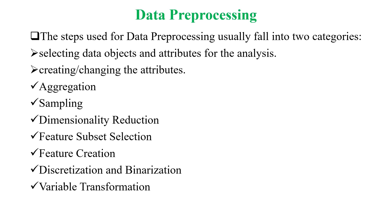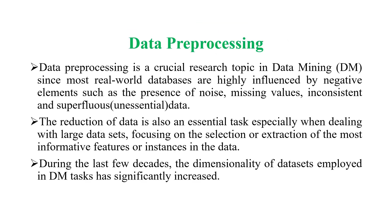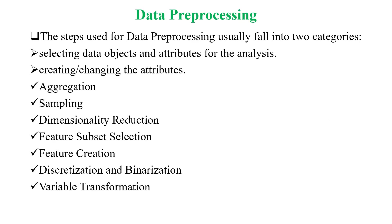The steps used for data pre-processing usually fall into two categories. The first category involves selecting data objects and attributes for analysis, and creating or changing attributes. Techniques include aggregation, sampling, dimensionality reduction, feature subset selection, feature creation, discretization, binarization, and variable transformation. In subsequent videos we are going to see feature extraction, dimensionality reduction, and variable transformation — all very important things in data pre-processing. Thank you.